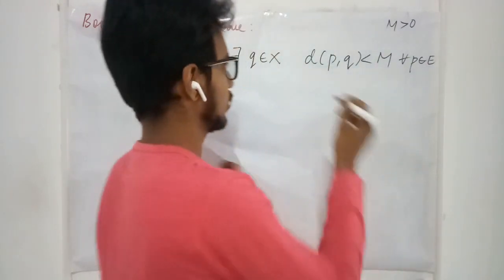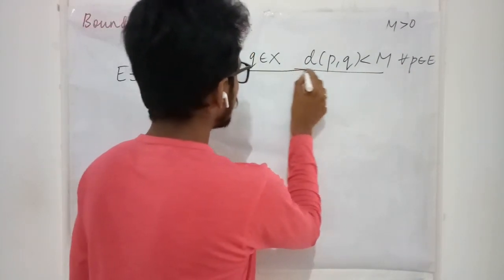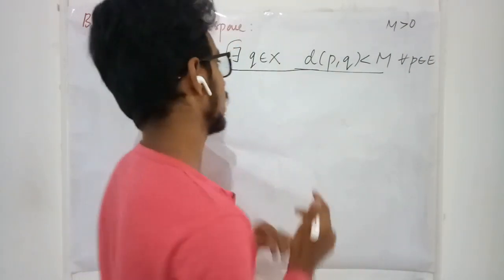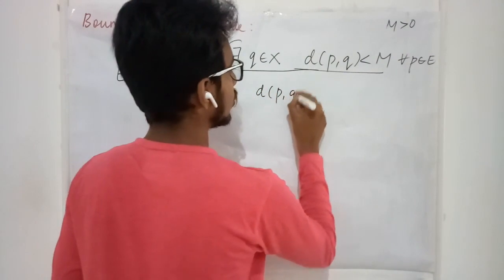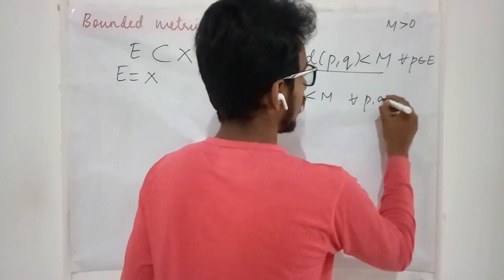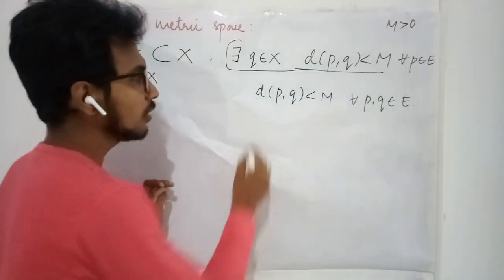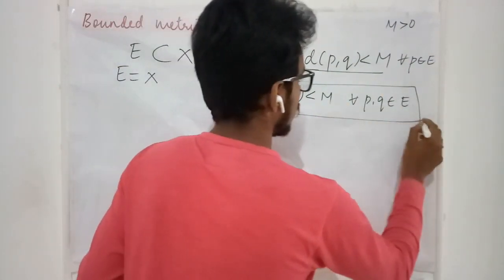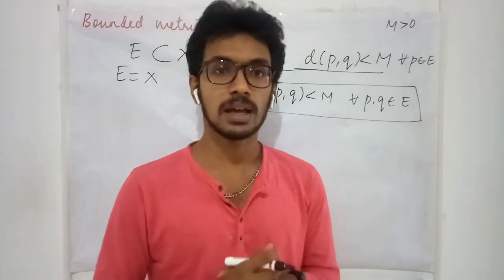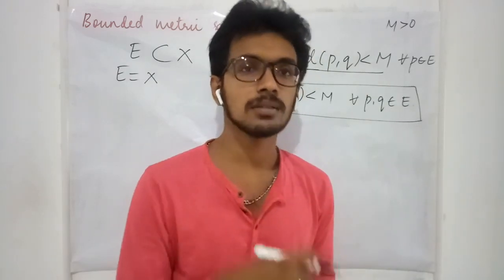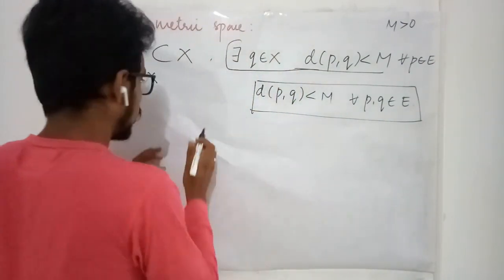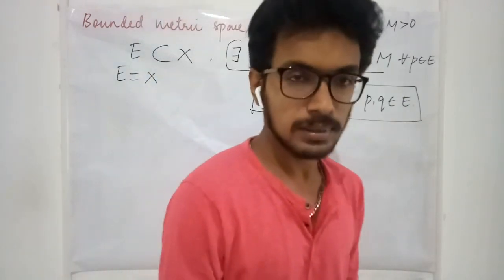Let us refine the statement of boundedness. There exists some q such that d(p, q) is less than M for some positive real quantity M, and this is true for all elements in the set. The boundedness depends on the metric that we define on the space — the metric is going to play a very important role in checking whether the set is bounded or not.